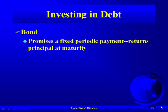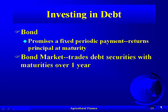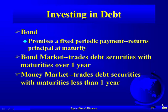Looking at investing in debt — the bond market — it's basically a promise of fixed periodic payments. You buy the bond, pay the money, and in return the issuer pays the bondholder a fixed payment through its maturity. The bond market trades debt securities with maturities over one year, whereas the money market trades debt securities with maturities less than one year. Some of you with savings accounts have the opportunity to put money into money market accounts, differentiated from the bond market by the length of their maturities.